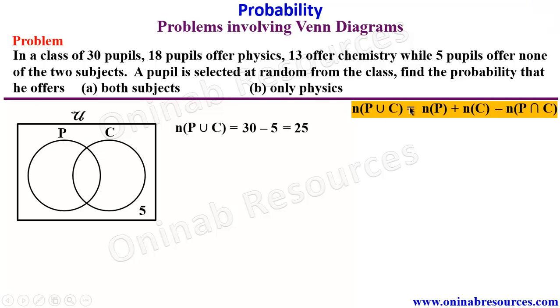So we have the relation in our previous video of probability that N of P union C is equal to N of P plus N of C minus N of P intersection C.